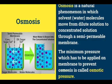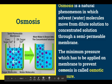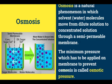After osmosis, in the dilute sugar solution part you can see there is a decrease in level of water because the water molecules have moved towards the concentrated solution. After osmosis, more number of water molecules are present in the concentrated solution. This process whereby water molecules move from dilute solution to concentrated solution through a semi-permeable membrane is known as osmosis. The minimum pressure that has to be applied on this membrane to prevent osmosis is called osmotic pressure.